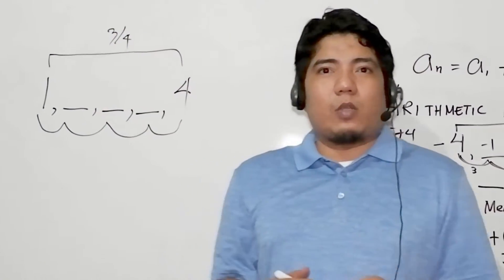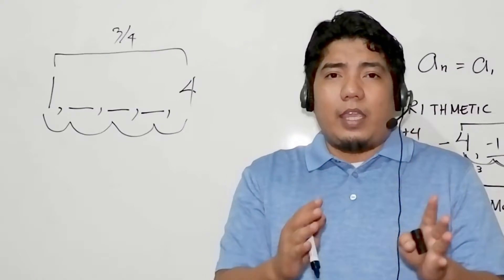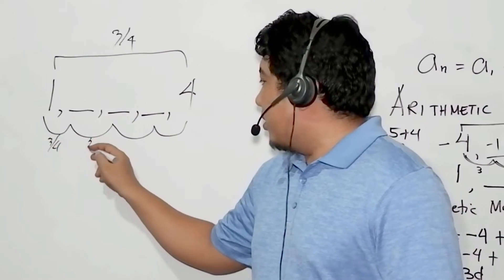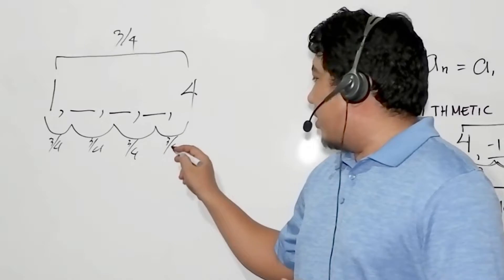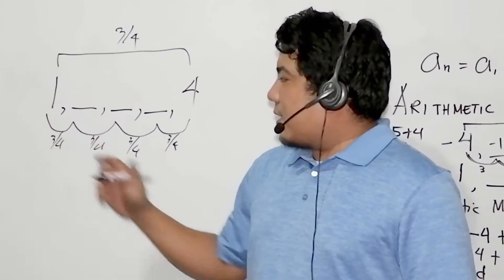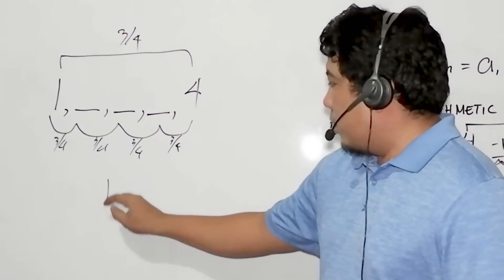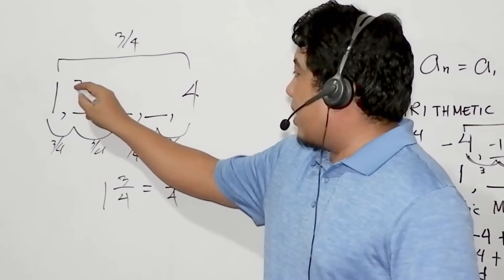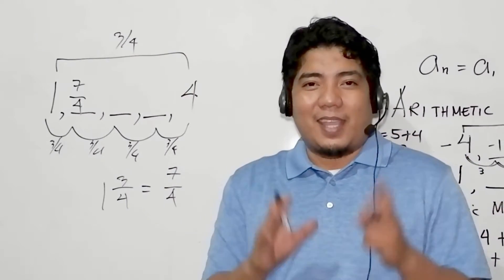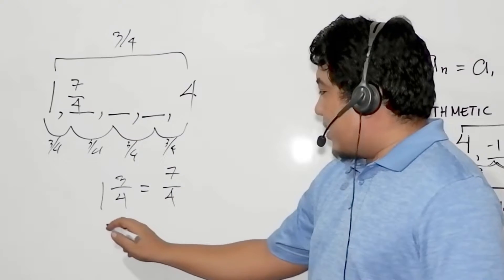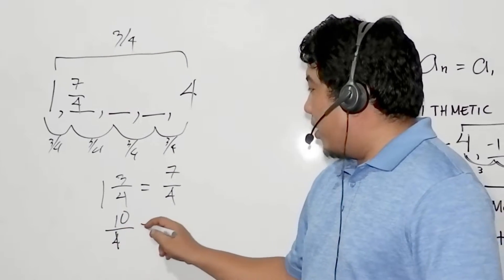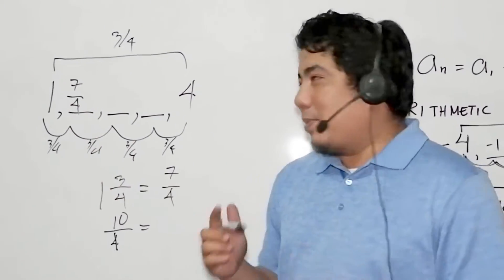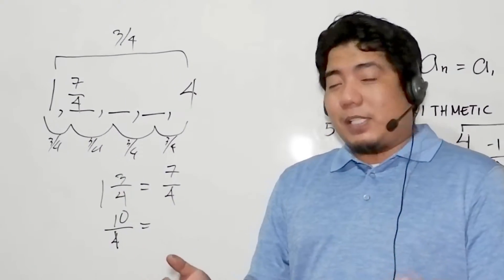So you divide this by 4. Now, this is the question. Sir Ash, 3 cannot be divided by 4. Now, that will be your difference. So that is 3 fourths, 3 fourths, 3 fourths, and 3 fourths. How do you add that? 1 plus 3 fourths, that is 1 and 3 fourths, or equal to 7 over 4. Next, 7 over 4 plus 3 fourths, that is 10 over 4. 10 over 4 can be simplified into 5 over 2.